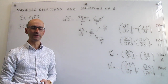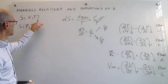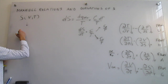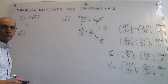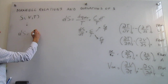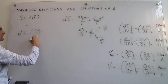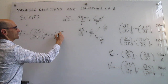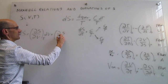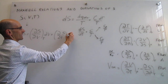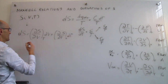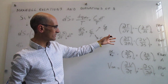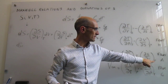Now let's look at how the entropy depends on either volume or pressure as well. Taking the expression S(V,T), we examine the sensitivity of the function to the variables by looking at the first derivatives. In this case, we have a derivative that depends on volume at constant temperature, and another that depends on temperature at constant volume, which we already have.